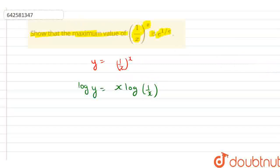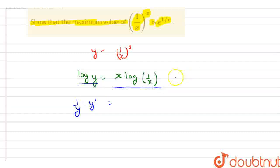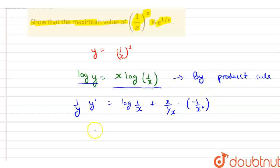Now, differentiate this with respect to x. From here we have the differentiation of log y, which is (1/y)·y', and that is equal to the differentiation of x·log(1/x), done by the product rule. Using the product rule, we have log(1/x) plus x · (1/(1/x)) · (−1/x²). So, from here we have y'/y = log(1/x) − 1.